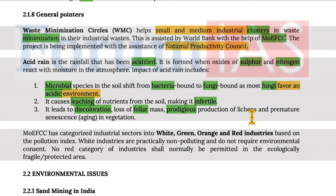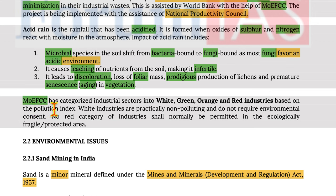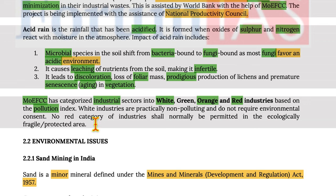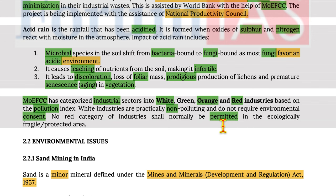Acid rain also leads to discoloration, loss of foliar matter, and excessive production of lichens. The Ministry of Environment, Forest and Climate Change has categorized industrial sectors into white, green, orange, and red industries based on the pollution index. White industries are practically non-polluting and do not require environmental consent, while red category industries are normally not permitted in ecologically fragile and protected areas.